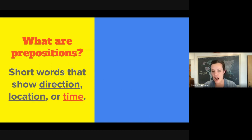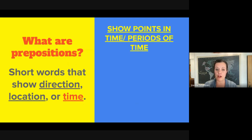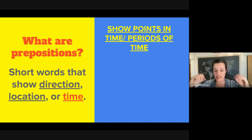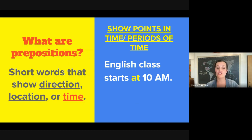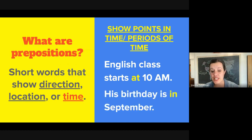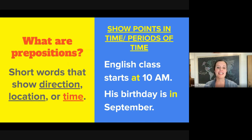And finally, my friends: time. There are many prepositions of time, and these show points in time — specific points in time — or periods of time. The preposition "at" is also used with time, and we will discuss the differences in a future video. But for example, "English class starts at 10 a.m." means this class begins exactly at 10 a.m. And we show this by using "at." His birthday is in September — when we are discussing months, this period of time will use "in."